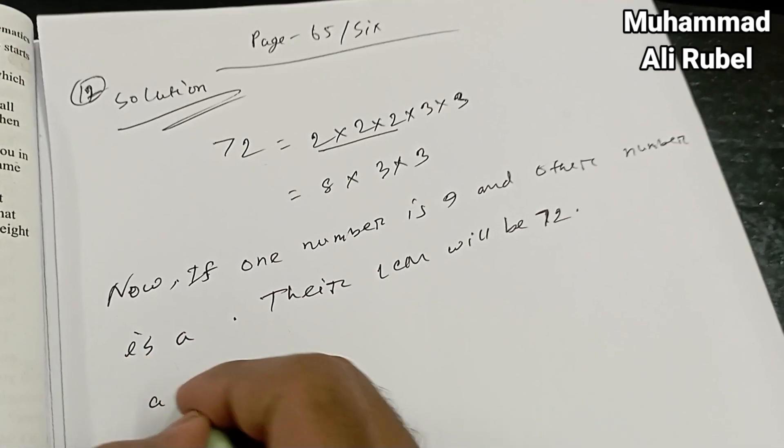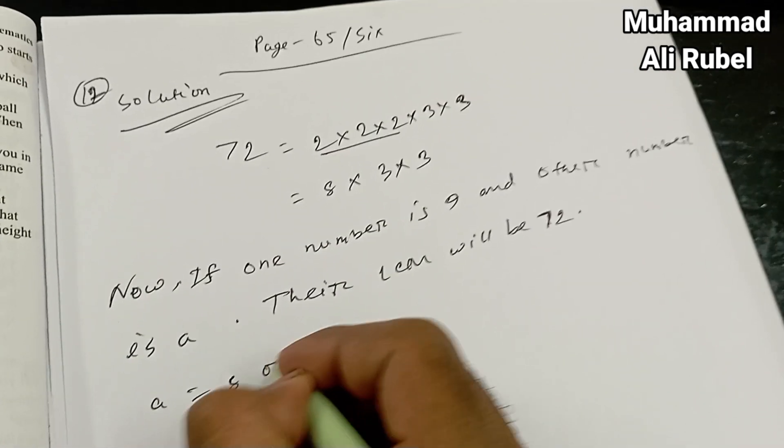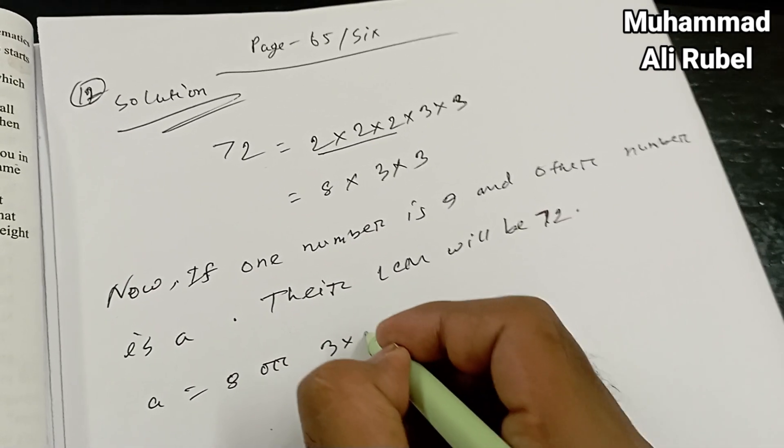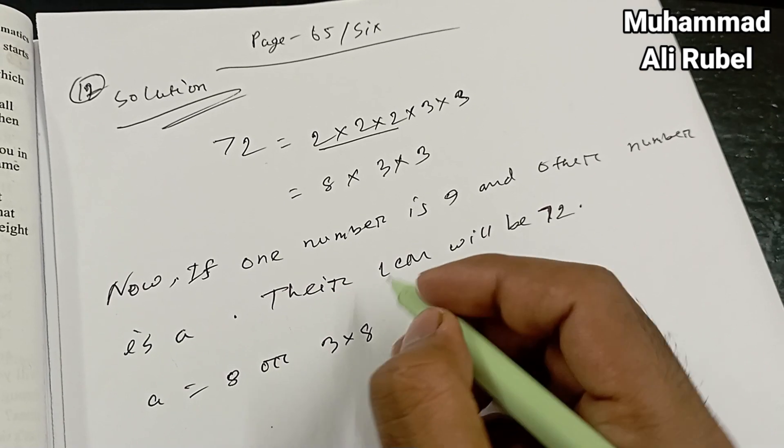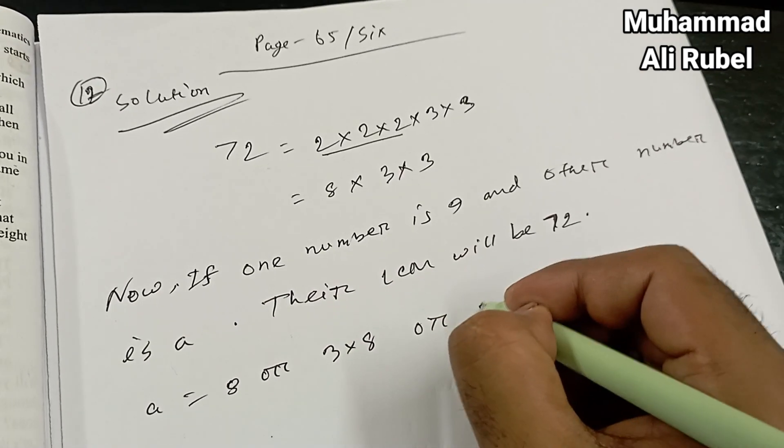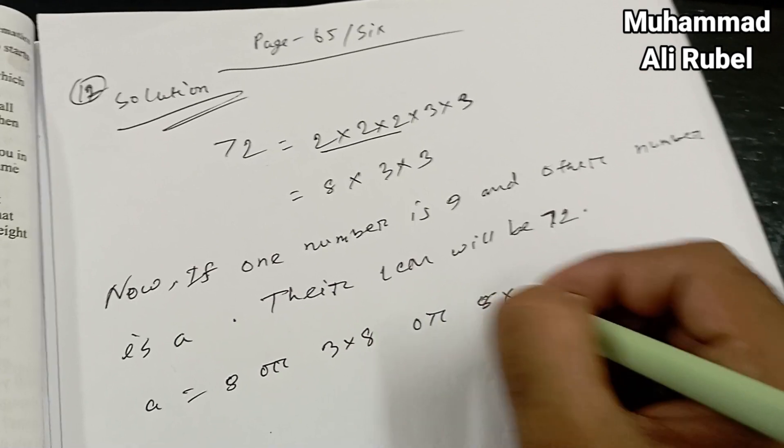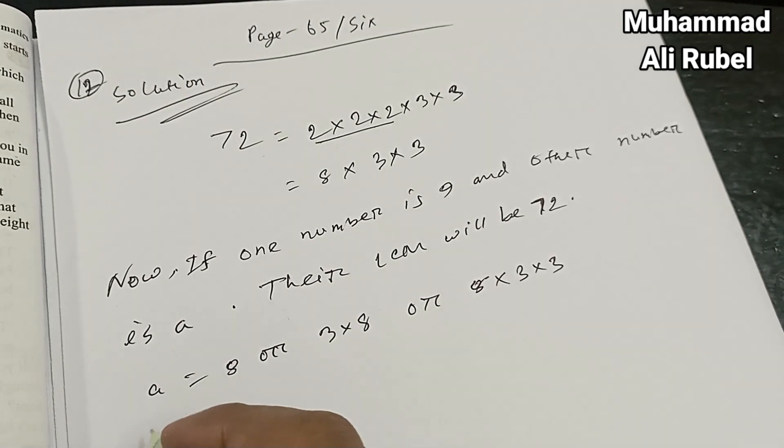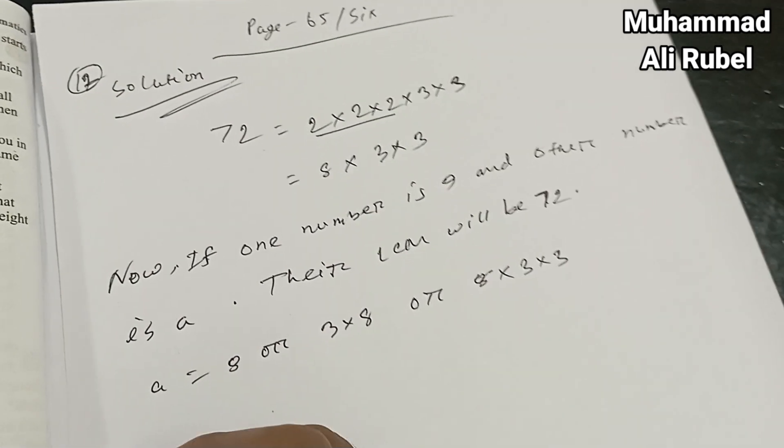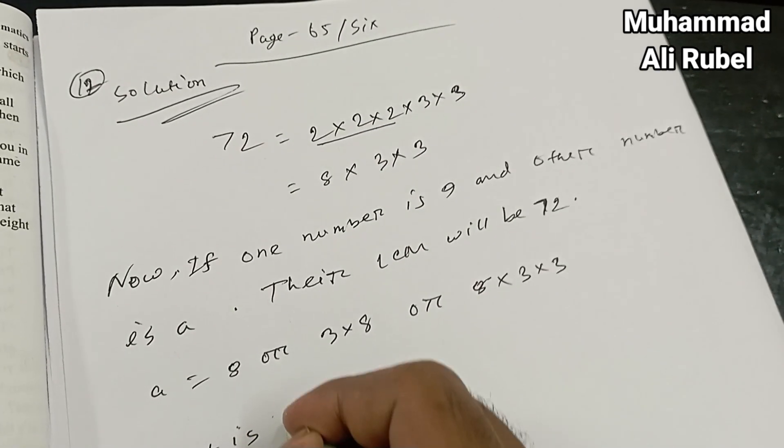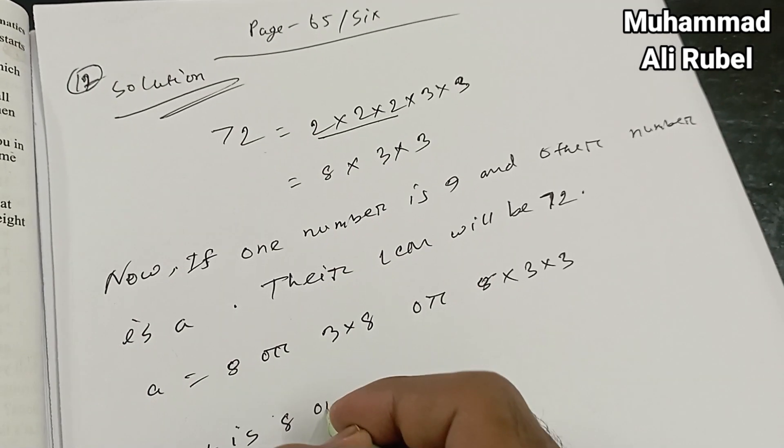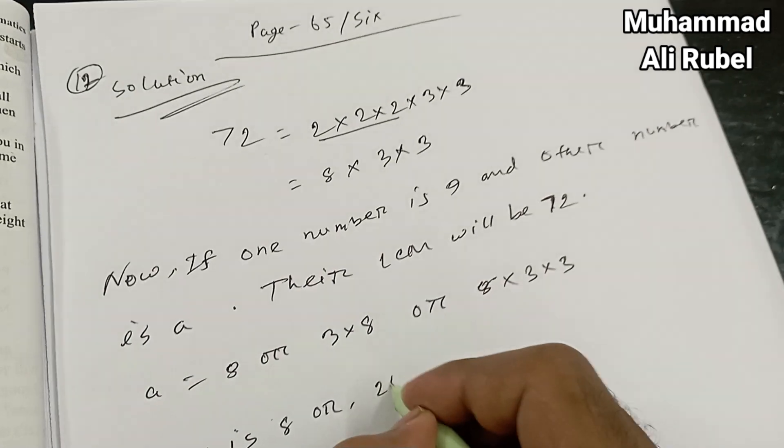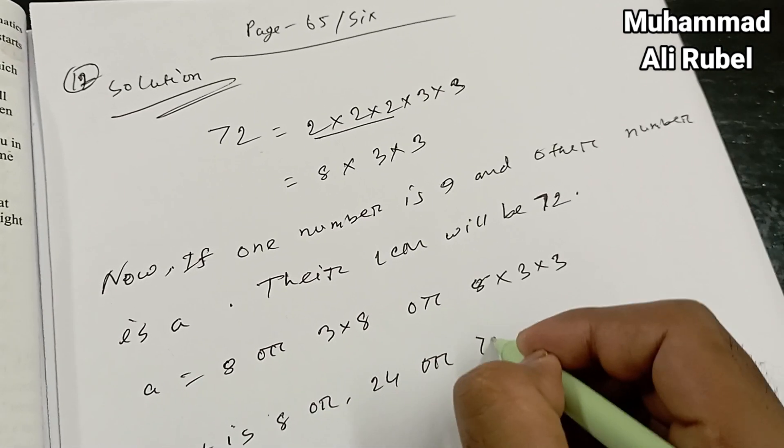Okay, a equal 8 or 3 into 8 or 8 into 3 into 3. That is 8 or 24 or 72.